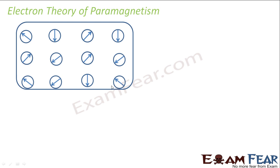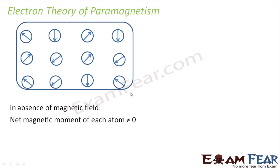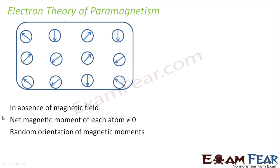As you can see here, the magnetic moments are randomly oriented. Because of this random orientation, the net magnetic moment of the entire substance comes out to be zero. So in absence of a magnetic field, the net magnetic moment of each atom is not zero, but the magnetic moments are randomly oriented, so the net magnetic moment of the entire substance is not considerably high.